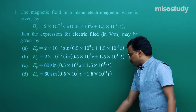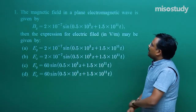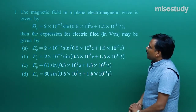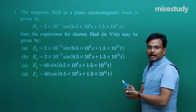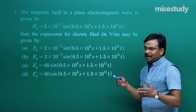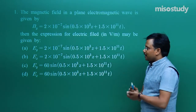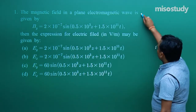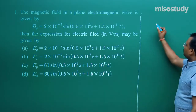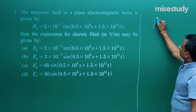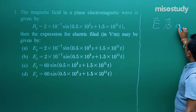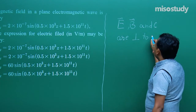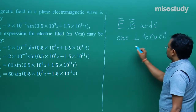Here is your first question. The magnetic field in a plane electromagnetic wave is given by B = B₀ sin(kz + ωt). I am just mentioning the standard equation so that you can visualize what exactly the standard or ideal equation is. Now you have to find the electric field. As we know, E, B, and C are all perpendicular to each other.